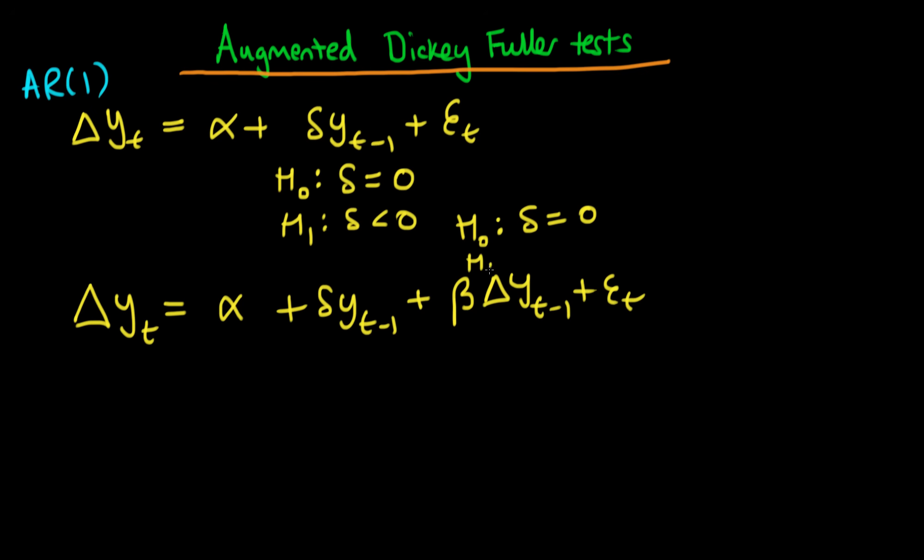The alternative, that we have a stable AR2 process, is that delta is less than 0. This generalizes quite well to any order AR process, so in general...